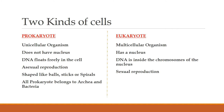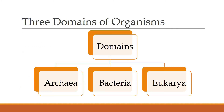Now let's see the three domains of organisms. The domains are of three kinds: archaea, bacteria and eukaryote. So let's see each and everything in detail.